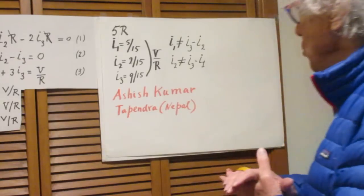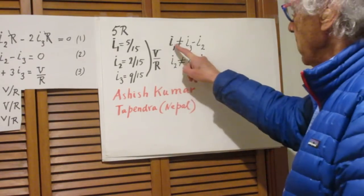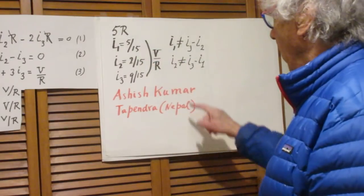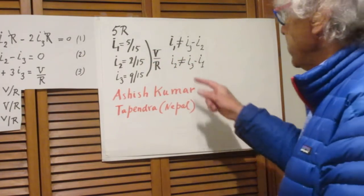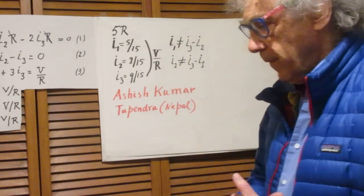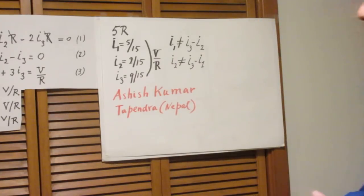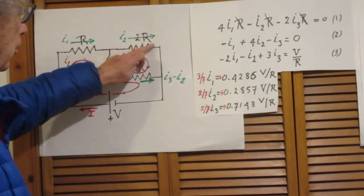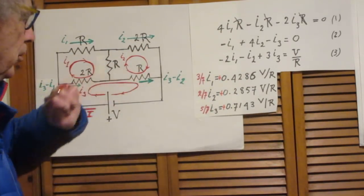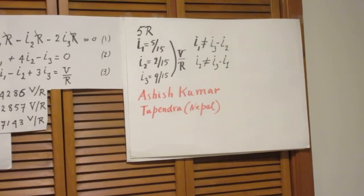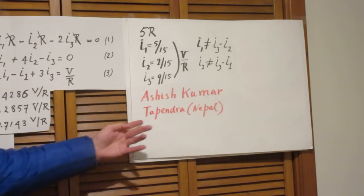Now, when the resistor was 2R, remember I1 was I3 minus I2, but that's no longer the case. And when this resistor was 2R, I2 was also I3 minus I1, but that's no longer the case. Therefore, it's clear that if that resistor in the upper right is 5R, that the current through the lower one left, that the current through this one is no longer the current through that one. And that was pointed out to me first by Ashish Kumar and by Tapendra in Nepal.